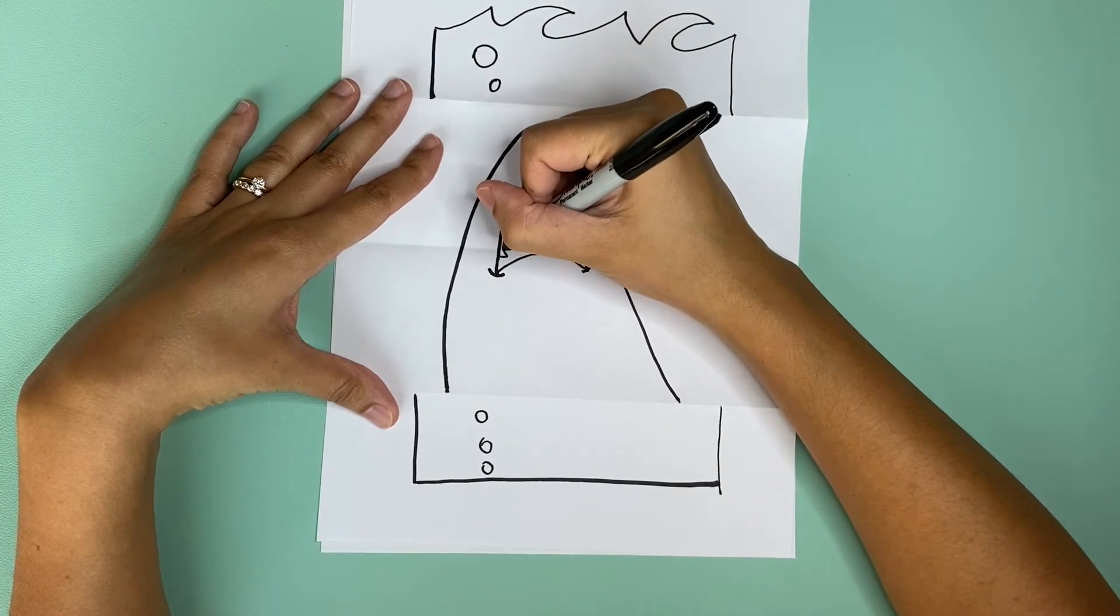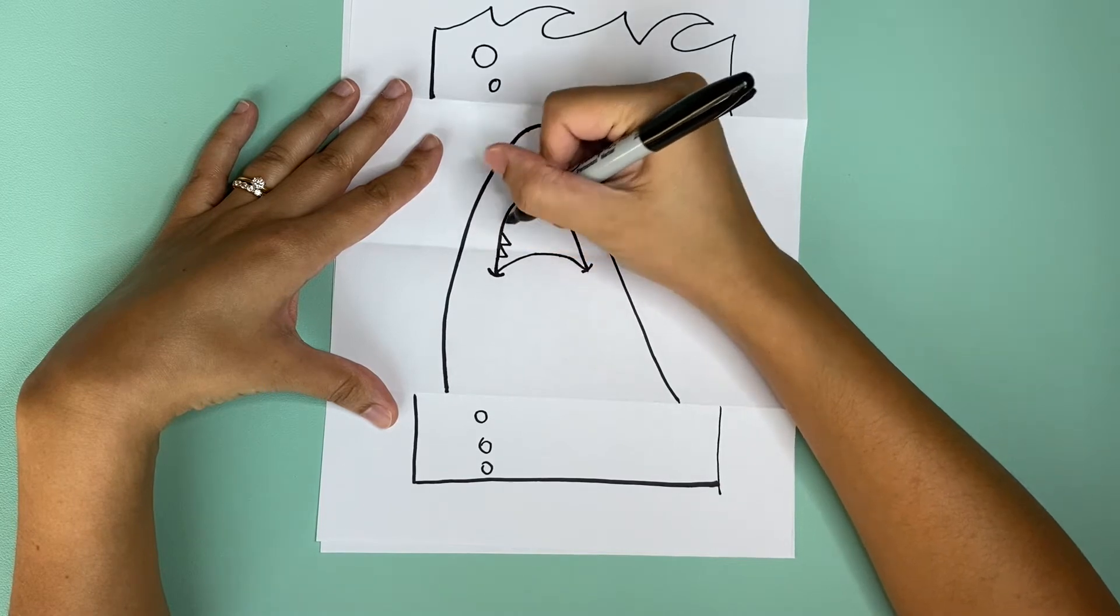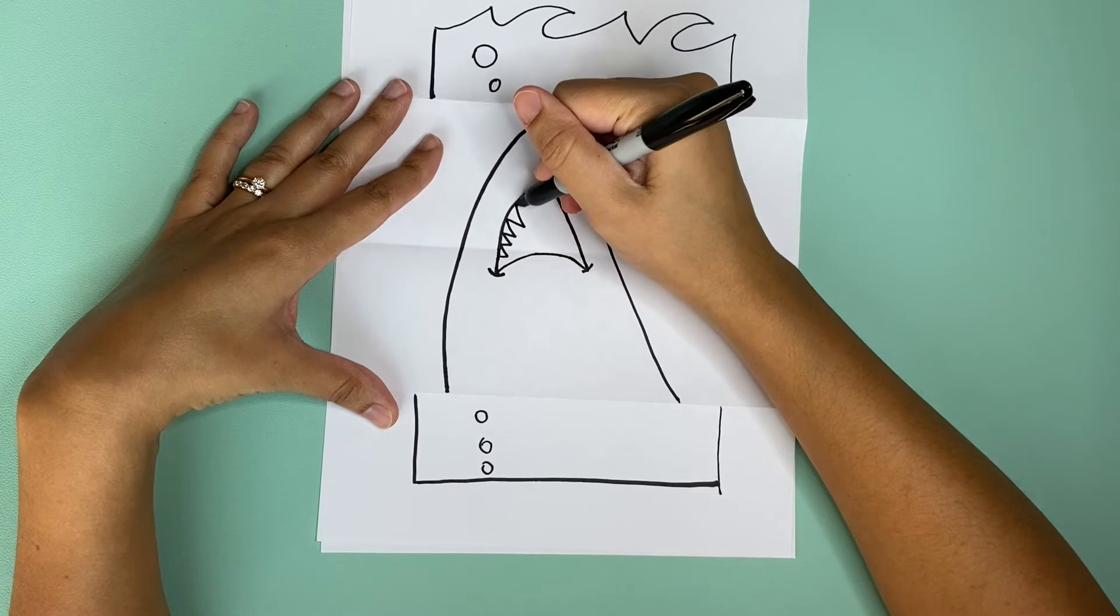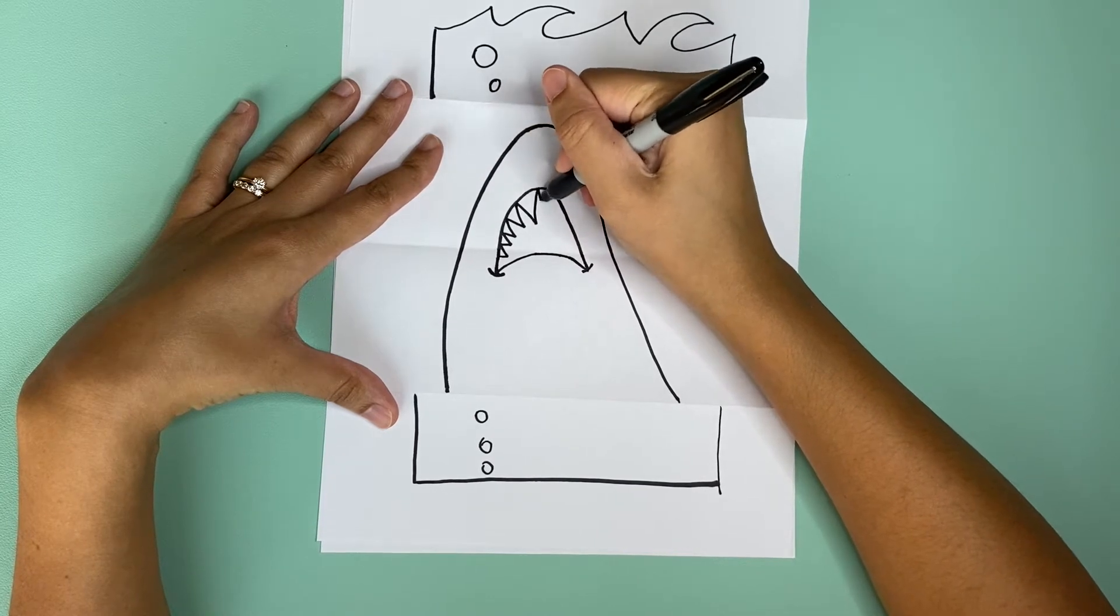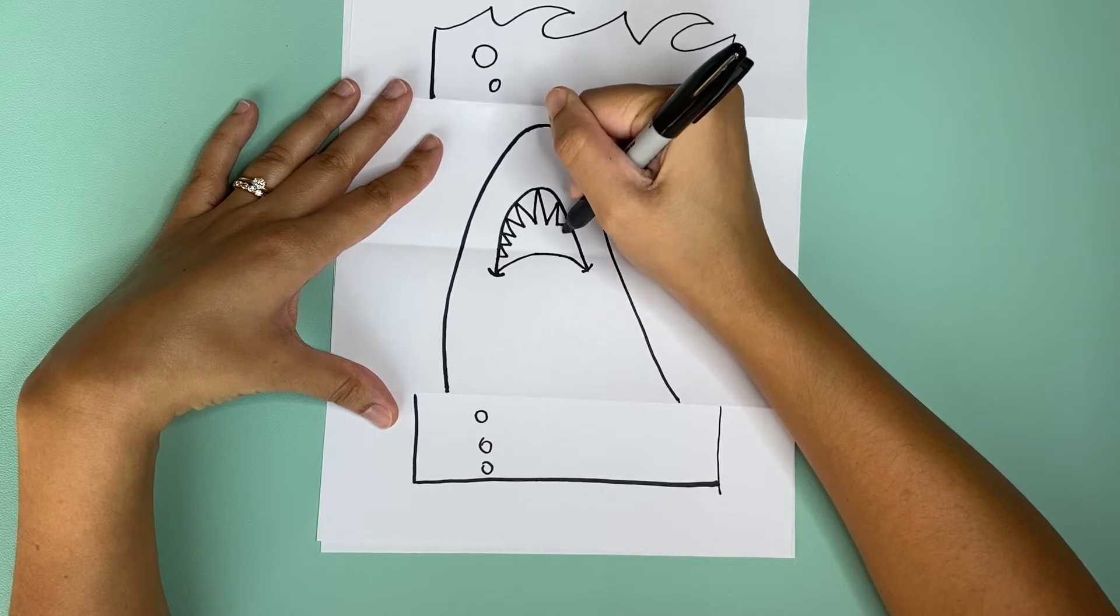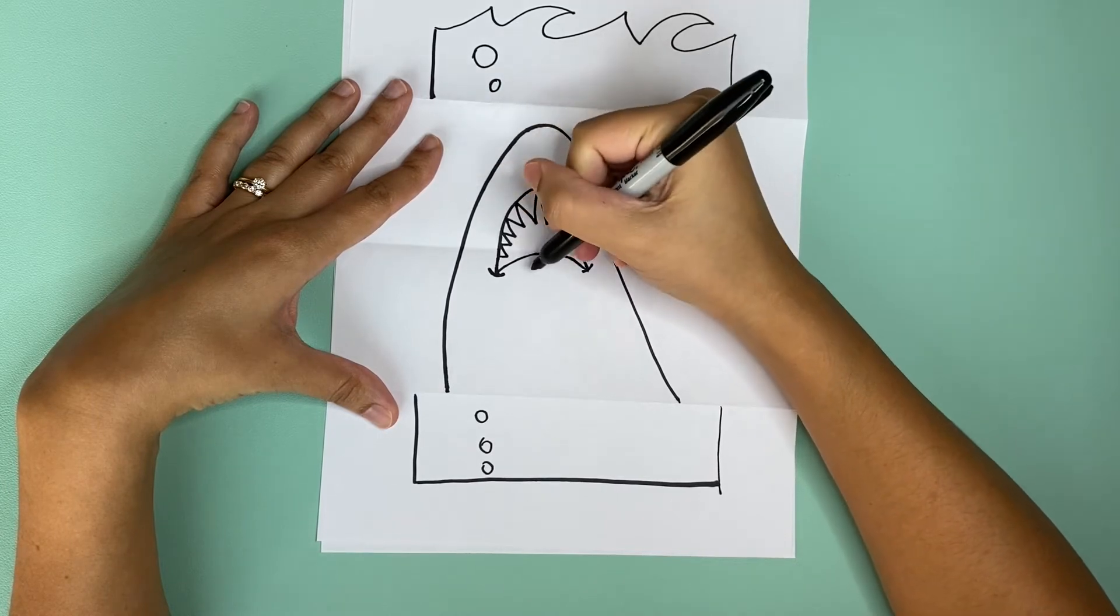We're going to make some teeth. All the teeth are is just a bunch of random triangles. You can make them bigger as you come to the middle and then they go smaller as we go out. Same thing for the bottom.